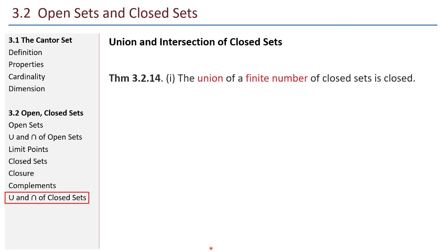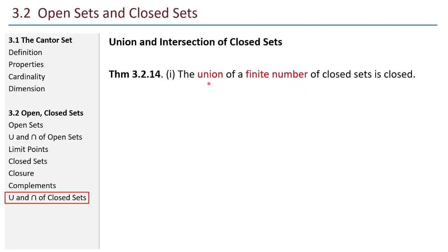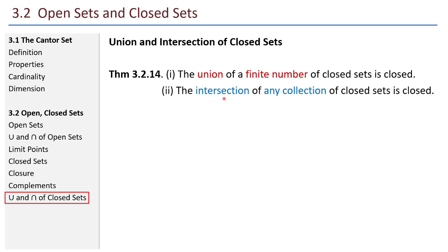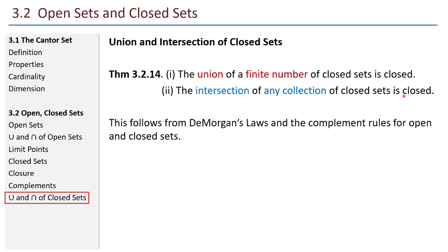Union and intersection of closed sets: the union of a finite number of closed sets is closed, and the intersection of any collection of closed sets is closed. This is a little different from what we saw with open sets, so compare and contrast the two statements. We don't actually have to make any new proof — this follows from DeMorgan's laws and the complement rules for open and closed sets.